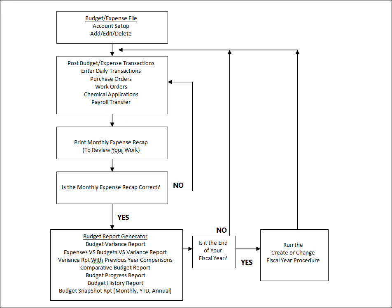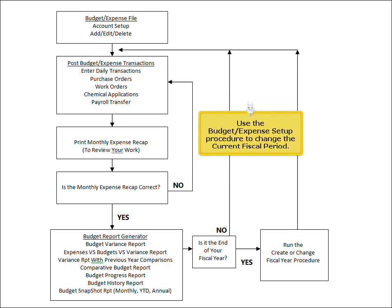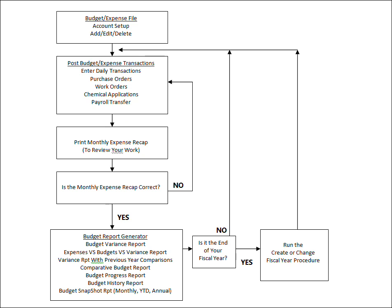Once all reports have been printed, you may then use the Budget Expense Setup Procedure to advance the current fiscal period to the next month. Repeat this cycle for each accounting period.